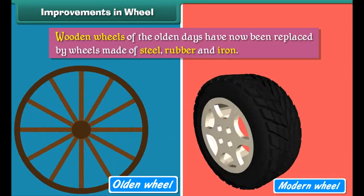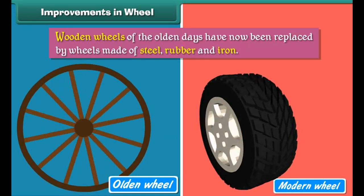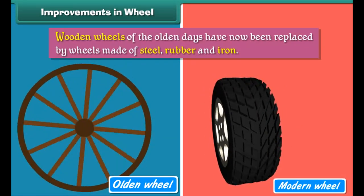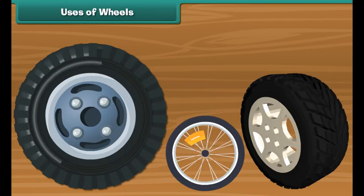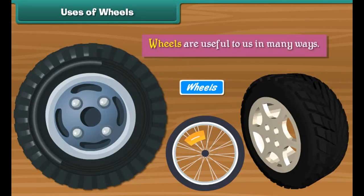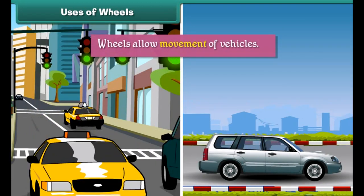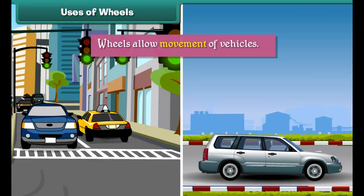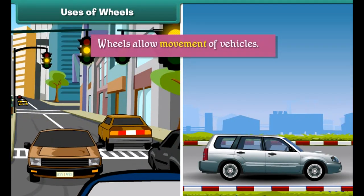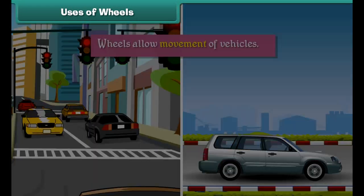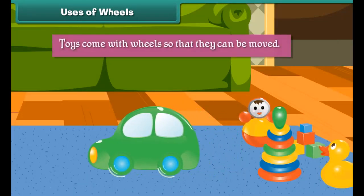Improvements in wheel. With the passage of time, wheels improved. Wooden wheels of the olden days have now been replaced by wheels made of steel, rubber and iron.